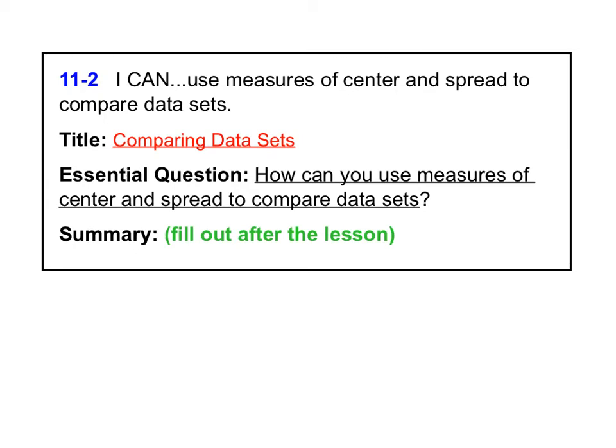Hello, in this video we're looking at lesson 11.2 on comparing data sets. Remember in the previous lesson, 11.1, we learned how to create various types of data displays. We looked at dot plots, histograms, and box plots. In this lesson we're going to look more at how to interpret data from these different data displays. The essential question we'll be answering is: how can you use measures of center and spread to compare data sets?